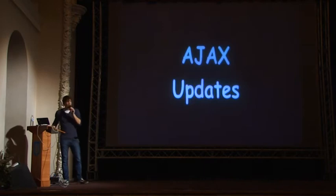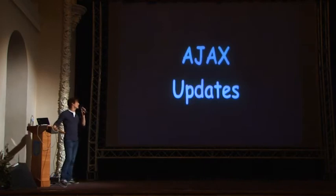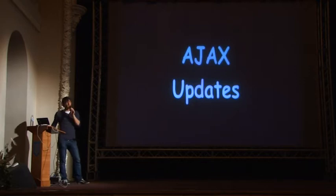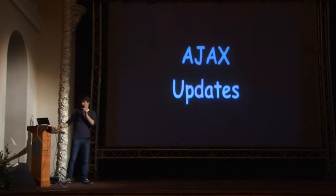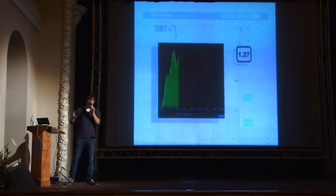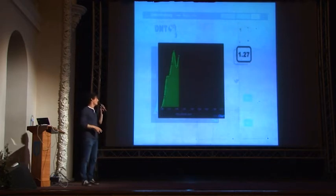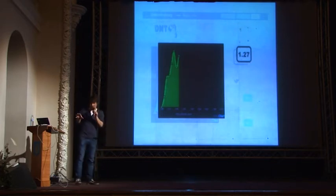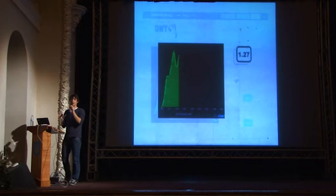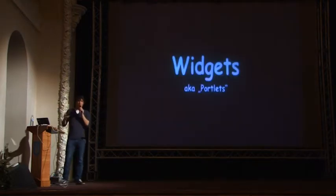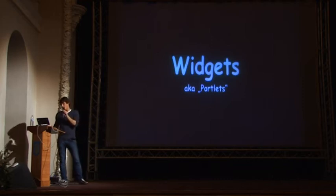The next feature I want in a widget library or user interface library is Ajax updates. I want my user interface to update dynamically and I don't want to update the entire page every time the user clicks on Drink. I want to have partial updates. This is a crucial point in Apodomo. In Rails, we don't have a very nice way for that, and this is why I started writing Apodomo.